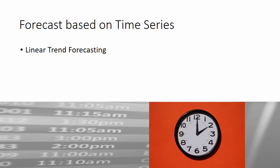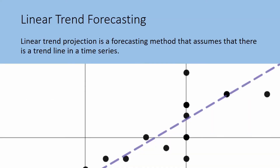Let us learn about a special time series forecasting method: forecasting using linear trend projection. Linear trend projection is a forecasting method that assumes that there is a trend line in a time series. A trend line will display data that increases or decreases at a specific and steady rate within a specific timeline. Linear trend shows steady, straight-line increases or decreases, so the trend line can go up or down.